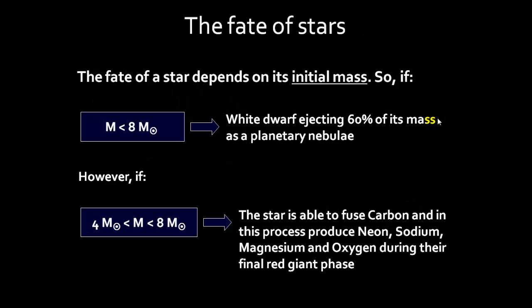The fate of a star depends on its initial mass. If the mass is less than 8 solar masses it will become a white dwarf, because about 60% is ejected, leaving less than 1.4 solar masses. However, in the upper range of 4 to 8 solar masses, the temperature is high enough that — in addition to the carbon produced as in the Sun — the carbon will fuse to produce neon, sodium, magnesium, and oxygen in the final red giant phase, because these stars are much more massive and reach higher temperatures than the Sun ever will.